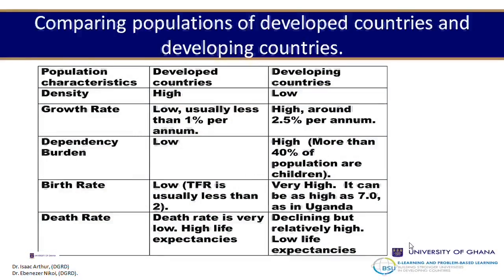So far we have talked about characteristics of developed and developing countries. For developed countries, population density will usually be high with a lot more people concentrated in one place, while in developing countries it's the opposite. Birth rates in developed countries are usually low versus developing countries, and the death rate is also higher in developing countries than developed. This is just a simple way to remember some of these contrasts between the two economic zones.